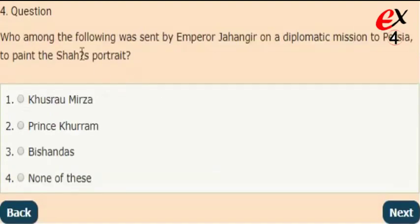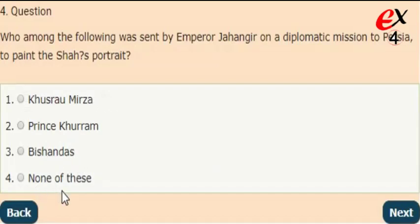Next question: who among the following was sent by Emperor Jahangir on a diplomatic mission to Persia to paint the Shah's portrait? The answer is option 3, Vishandas.